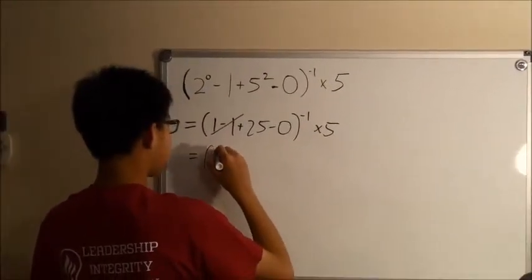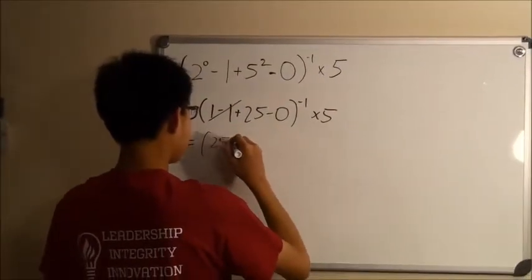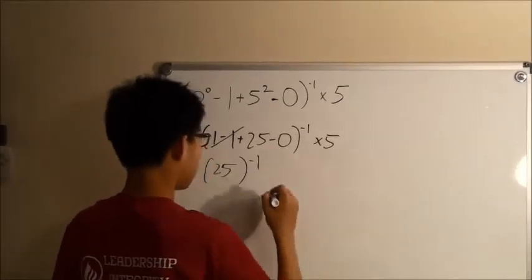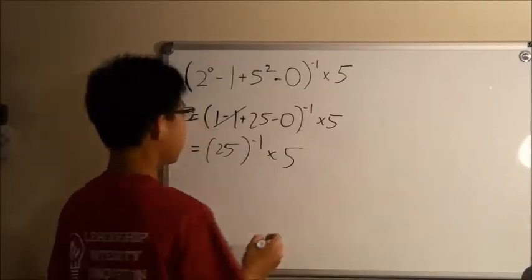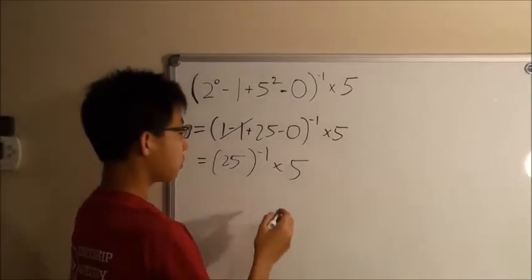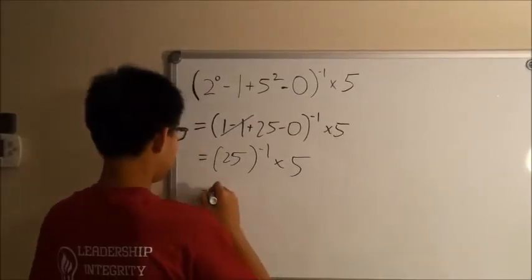So, the expression now becomes 25 to the negative first power, multiplied by 5.